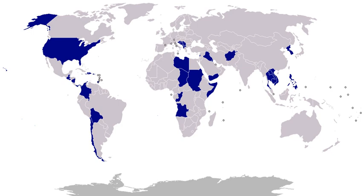1915–1934, Haiti, July 28, 1915 to August 15, 1934: United States occupation of Haiti. U.S. forces maintained order during a period of chronic political instability. During the initial entrance into Haiti, the specific order from the Secretary of the Navy to the invasion commander, Admiral William Benson, was to 'protect American and foreign interests.' 1916, China: American forces landed to quell a riot taking place on American property in Nanking.